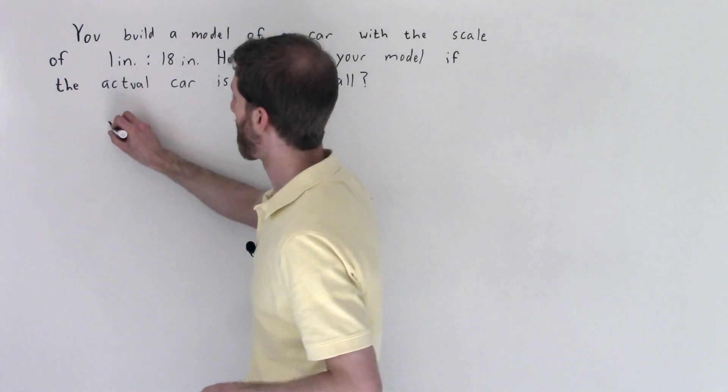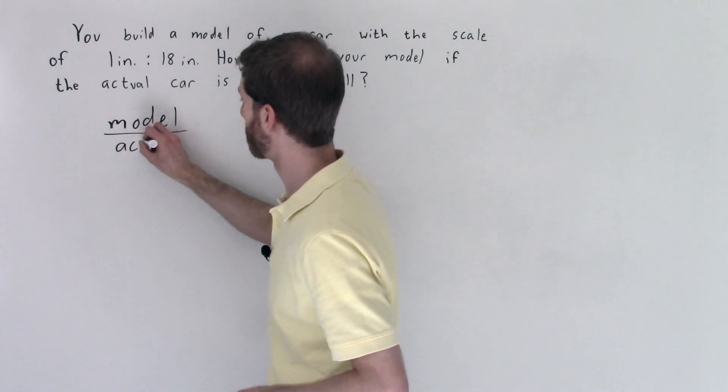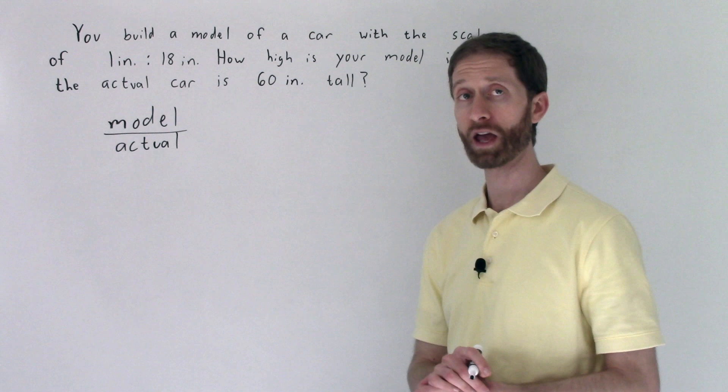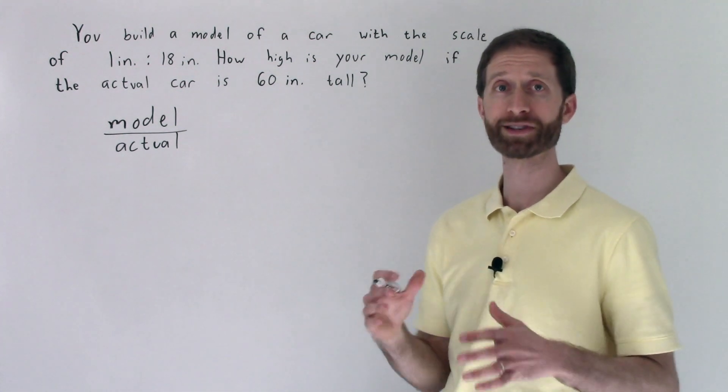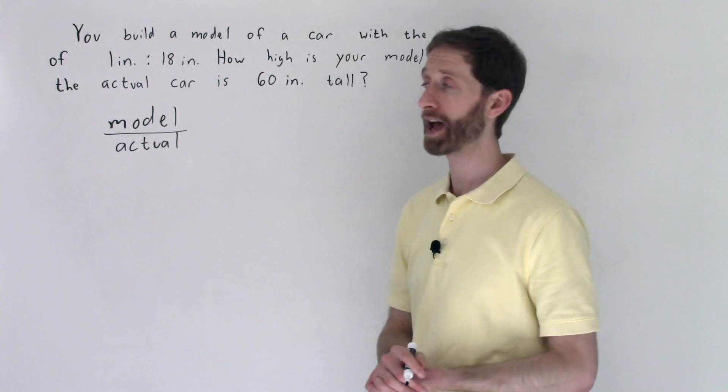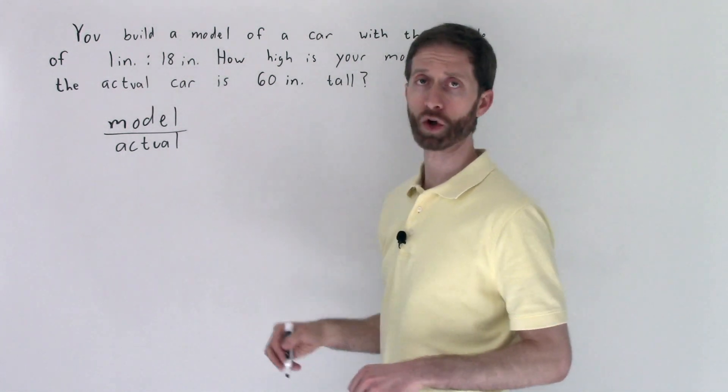So this is similar to that map word problem or word problems that we went over earlier in the video in that we are going to be comparing the model to the actual. It's always model to actual when we talk scales. You can do actual to model but just as a convention, meaning just so that we have a standard way of approaching it, we'll keep it as model to actual.